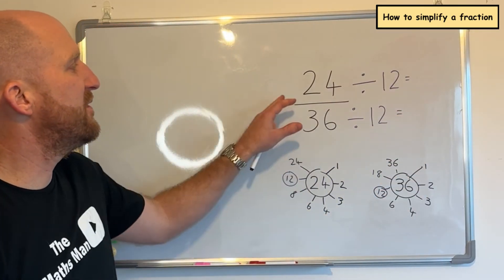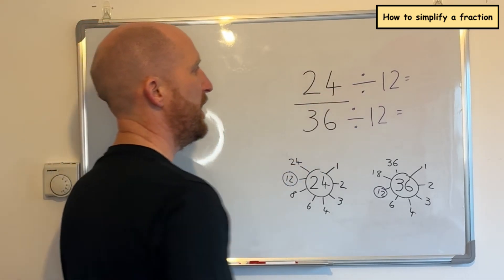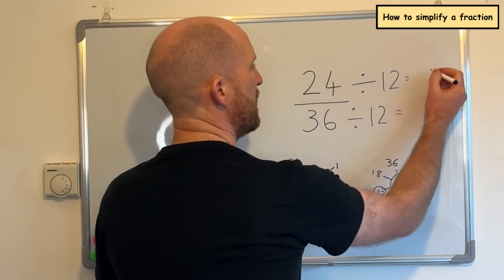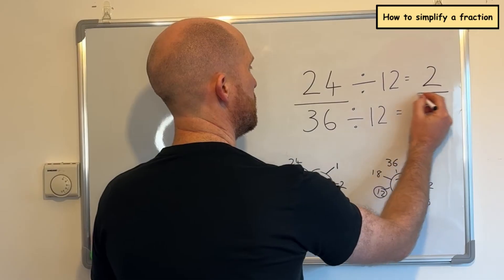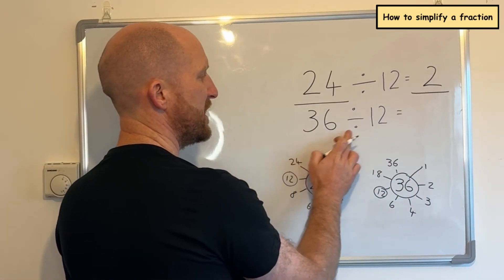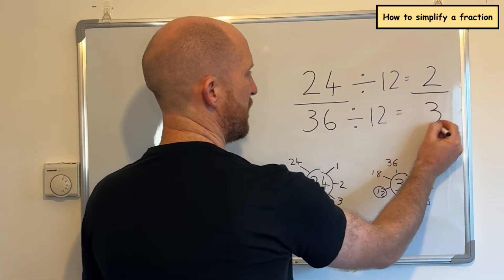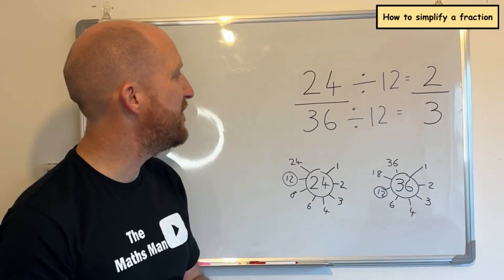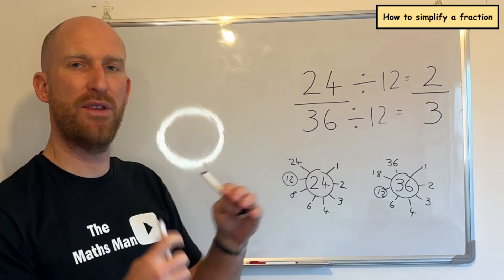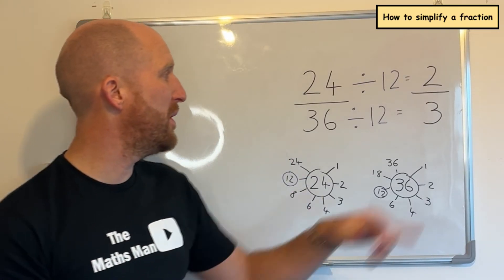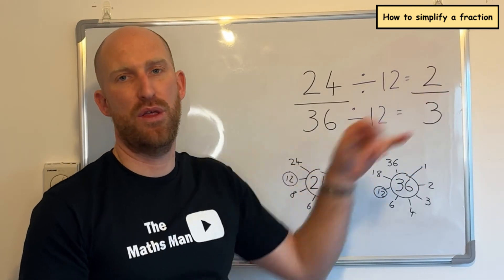24 divided by 12 gives me 2, and 36 divided by 12 is 3. So 24 over 36 simplified to its lowest form is the same as 2 thirds.